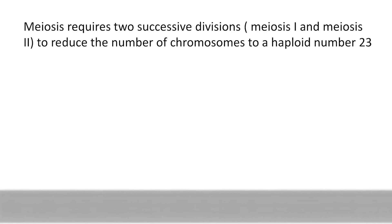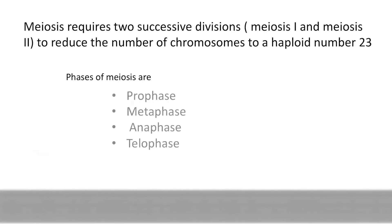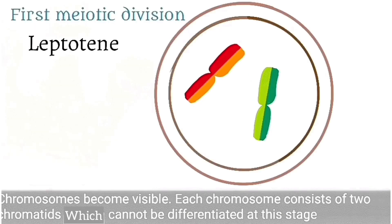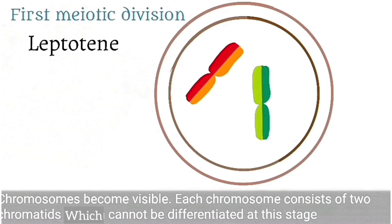Meiosis reduces the number of chromosomes to a haploid number of 23, unlike mitosis in which each of the two daughter cells receives a complete complement of 46 chromosomes. The phases of meiosis are prophase, metaphase, anaphase, and telophase. Further, prophase has four stages: leptotene, zygotene, pachytene, and diplotene. Now we're going to take a closer look into the phases — pay close attention to the details on the screen.